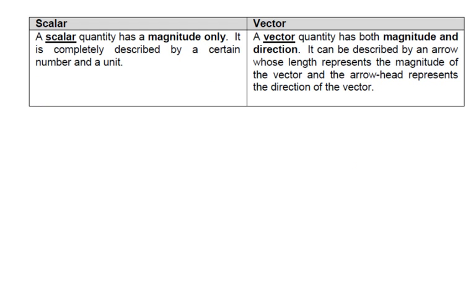OK, finally, I just want to talk about the difference between scalars and vectors. Now, a scalar quantity has a magnitude only. It's completely described by a certain number and its unit. So, for example, distance is measured in meters.